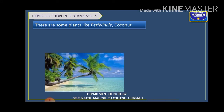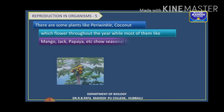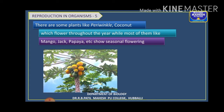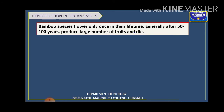There are some plants like periwinkle or coconut that flower throughout the year. So sometimes the reproductive phase cannot be easily marked in all plants, because some plants flower throughout the year. But there are plants like mango, jackfruit, and papaya that flower only during certain seasons — they show seasonal flowering. This differs from plant to plant.